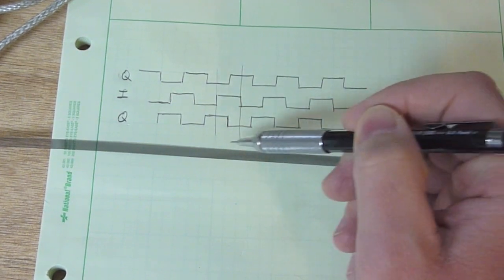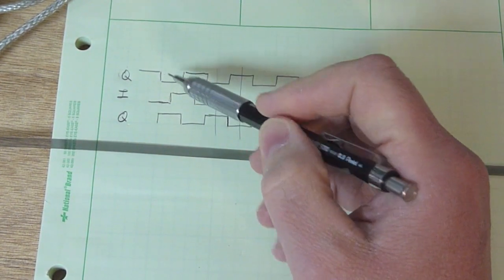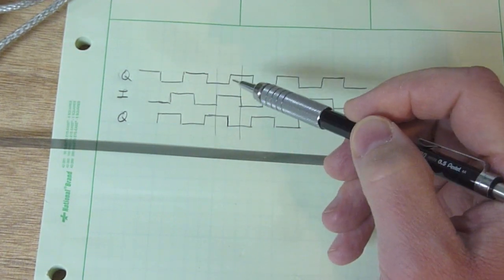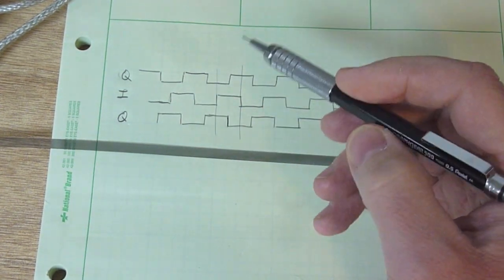And depending on the direction of the strip, you will either get the Q line to lead the I line or to lag it by 90 degrees. And so this lets us determine the direction of the strip.